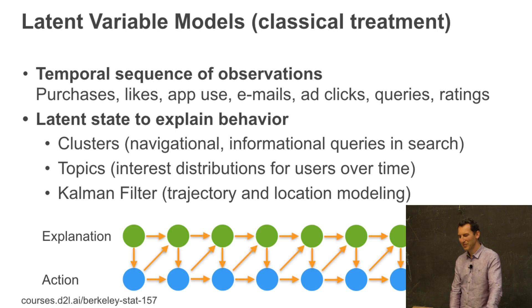So you may have heard of some of those things before. And I just want to give you a little bit of a context such that when somebody comes to you and says, well, we don't use deep networks because we use HMMs or Kalman filters or topic models over time or whatever, that at least you know how what they're telling you fits in with what you're doing and that what you're doing is just as principled as all the other things. Let's assume we have some temporal sequence of observations like purchases, likes, or app use, or emails, or ad clicks, or queries, or ratings.